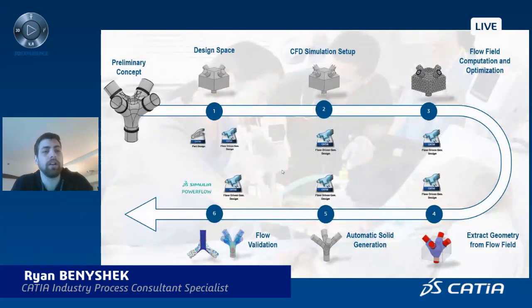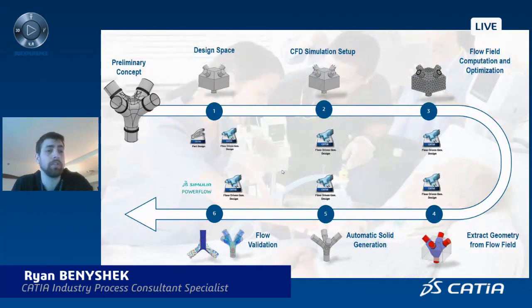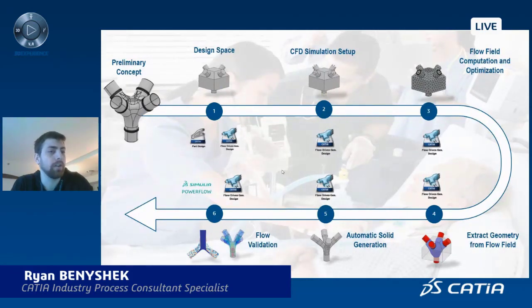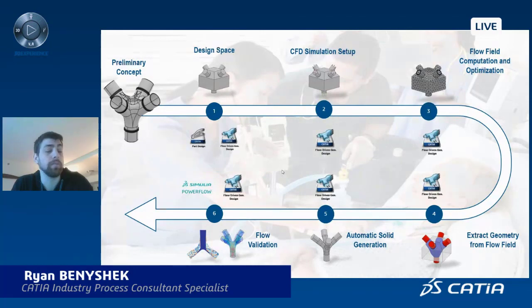One final slide highlights the overall workflow: we started with a preliminary concept good enough to set up a design space, then optimized for reducing pressure drop. Once we got that solid regenerated from the flow field, we did a final validation and used that as our second revision of the preliminary concept.